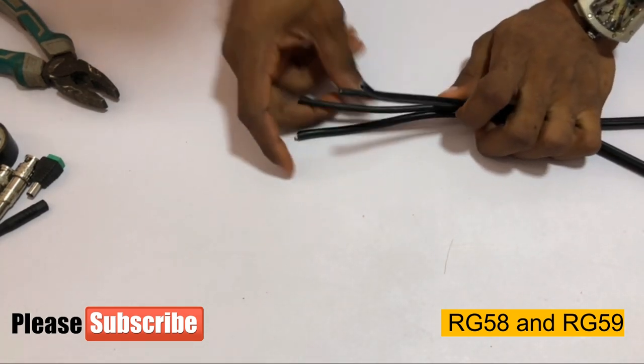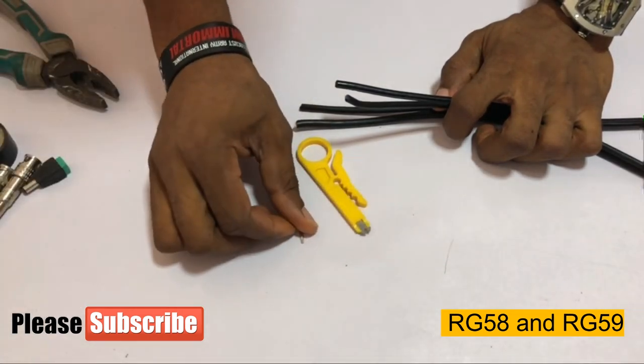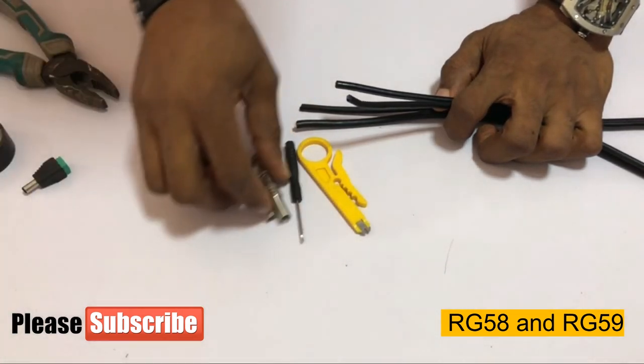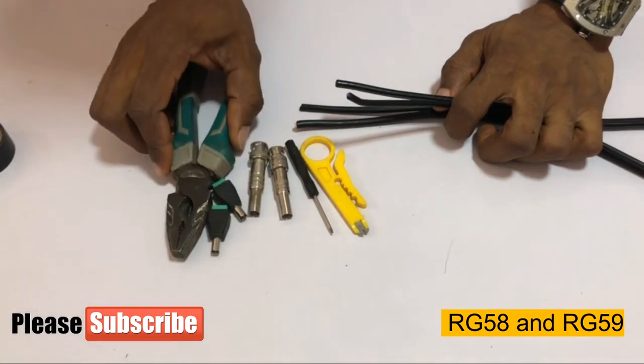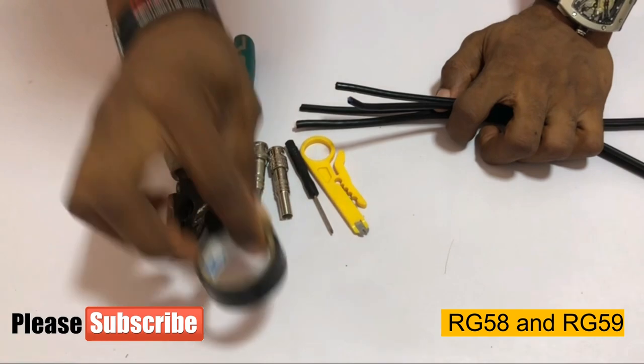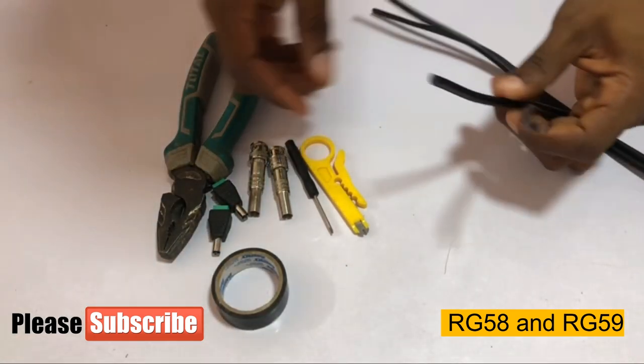Now what we need for this crimping is just a cable stripper, a mini screwdriver, BNCs, a power plug, and a plier. You can get your solo tape too if you need that. Okay, let me show you the difference between these two cables. I'm going to strip this cable out.